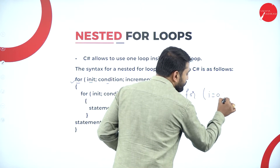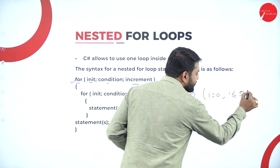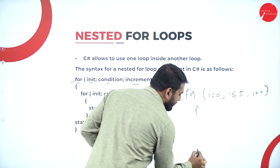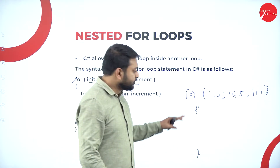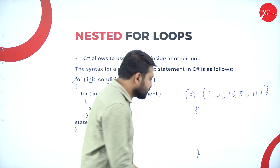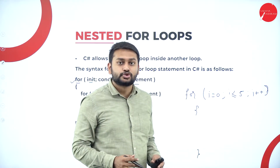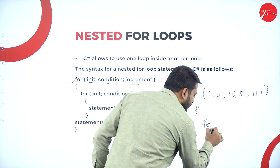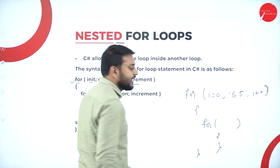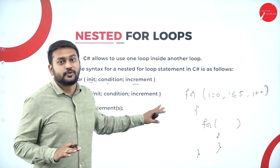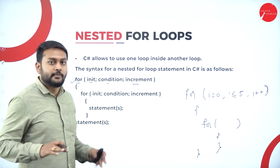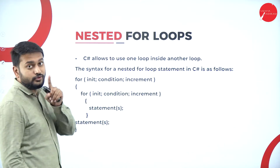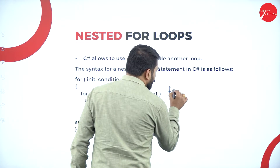For i equal to 0, i less than or equal to 5, i plus plus — that's the parenthesis. Then open flower bracket, close flower bracket. Within this block, I will write my statements. In case if I have one more for loop inside the for loop, I will call this a nested for loop. That is what you need to remember at this point.